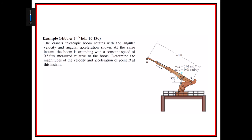In a crane with a telescopic boom that rotates with an angular velocity and angular acceleration shown, both of them are rotating in the clockwise direction. At the same instant the boom is extending with a constant speed of 0.5 feet per second measured relative to the boom. Determine the magnitudes of the velocity and acceleration of point B at this instant.